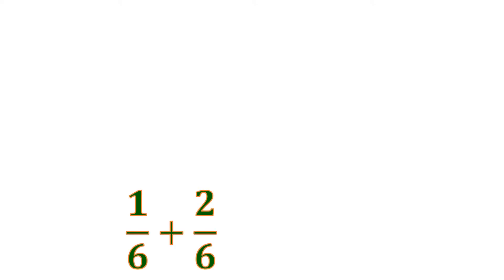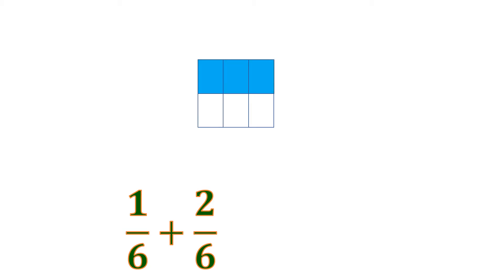Let's take another example: we have 1 sixth plus 2 sixths. Let us visualize this. We have 1 sixth, or 1 shaded part out of 6, and we want to add 2 out of 6. Here are the 2 shaded parts out of 6, and all in all it is 3 shaded parts out of 6.